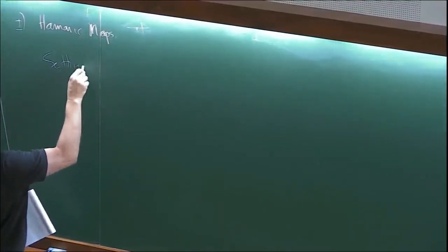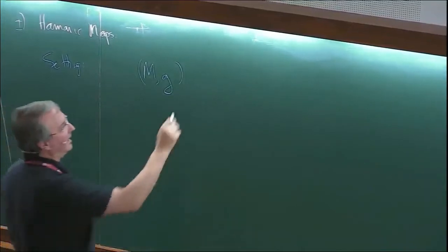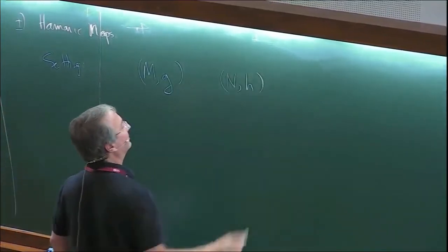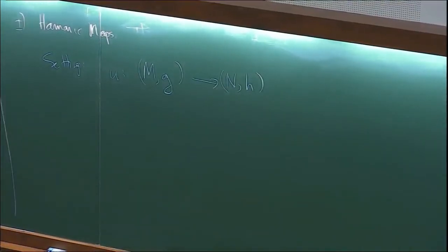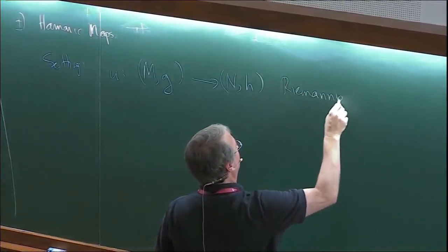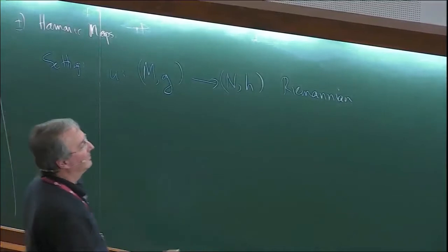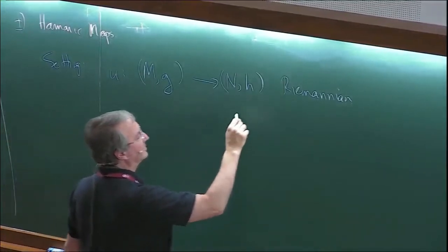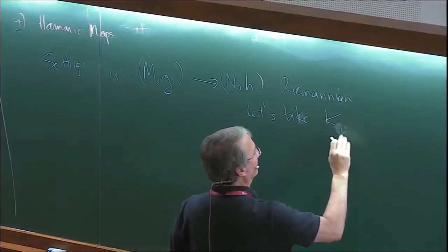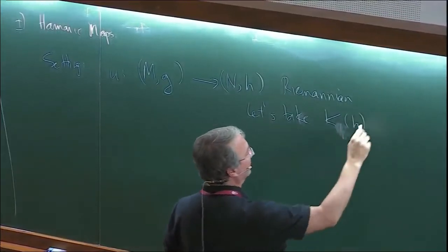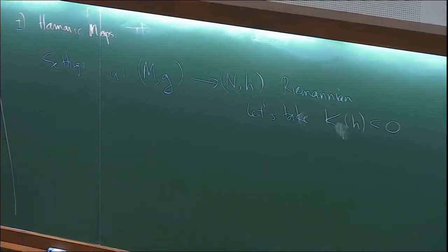So, harmonic maps. Here's the setting: we're in a Riemannian setting. I have a manifold with a metric as a domain, and a Riemannian manifold with a metric as the range, and I'm interested in maps from one to the other. Everything in sight is Riemannian. Just so I don't have to worry about hypotheses, let's take the curvature of the target metric to be negative rather than non-positive — that'll provide some uniformity.